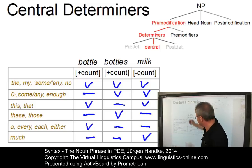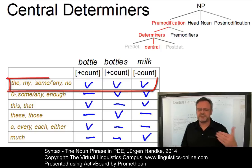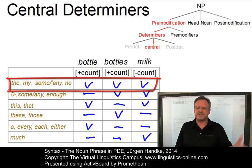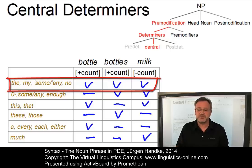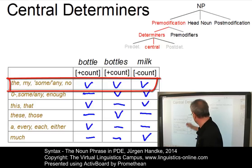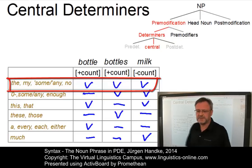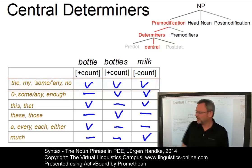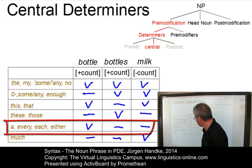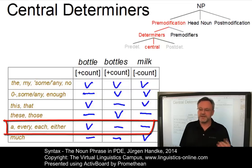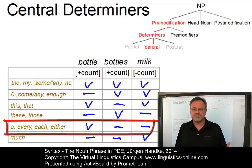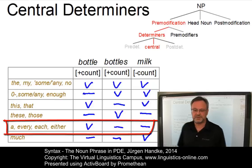So we can set up classes. For example, for the first class, we have determiners that can occur with count nouns — both in the singular and plural — and also with non-count nouns: 'the bottle', 'the bottles', and 'the milk'. If you take class five determiners such as 'a', 'every', 'each', and 'either', they can only be used with count nouns in the singular, such as in 'every bottle'.